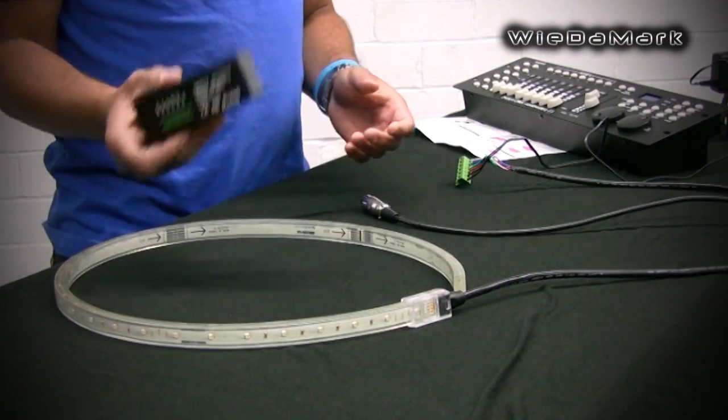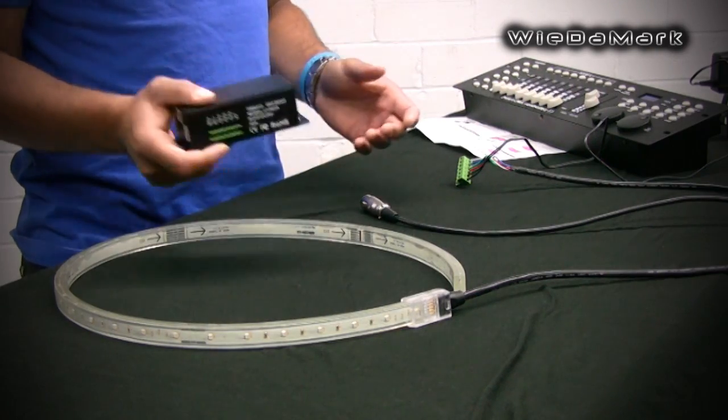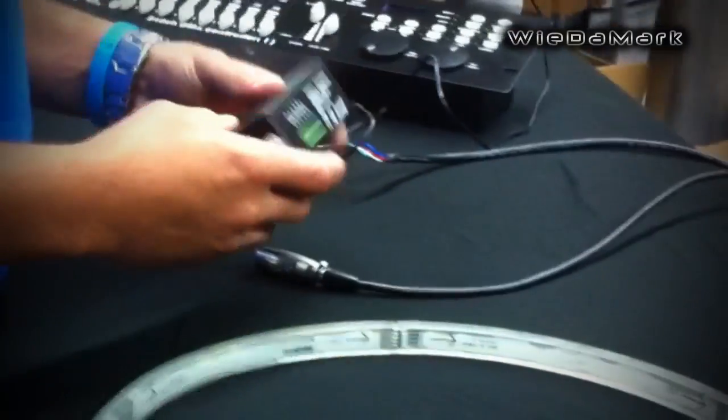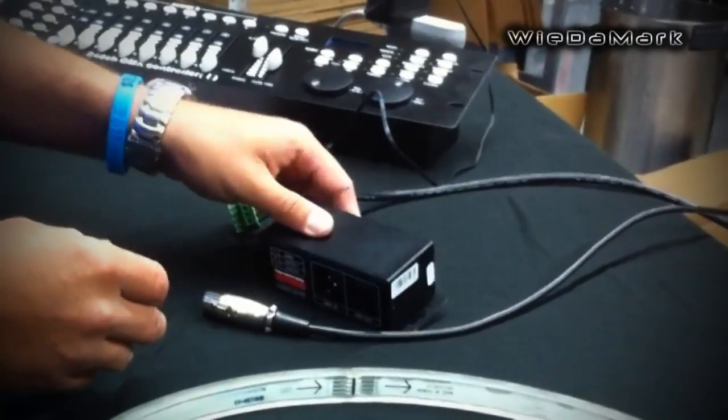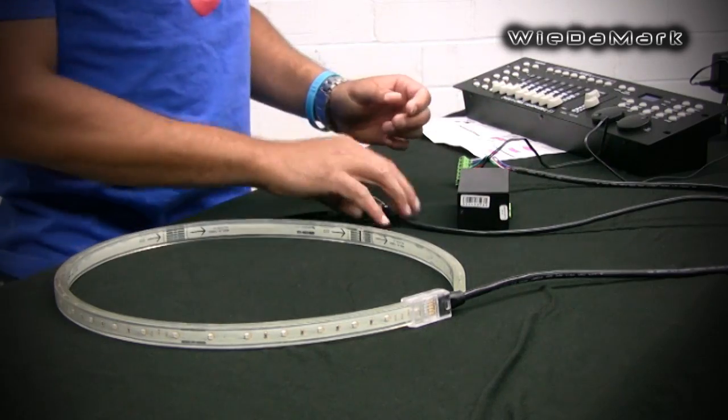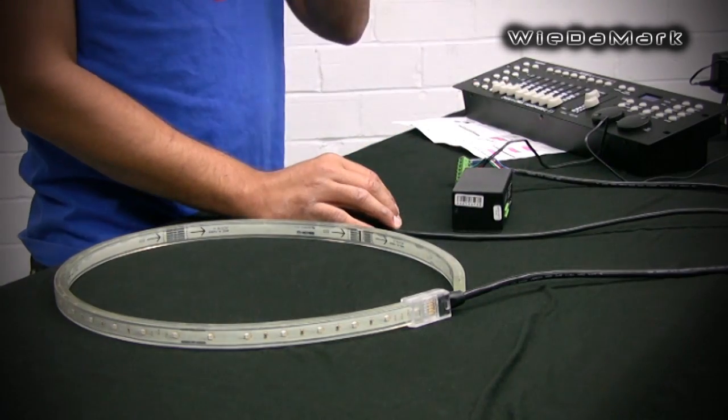This is the LT8030 DMX512 decoder. It takes any RGB and converts it into DMX so that you're able to use a DMX controller.